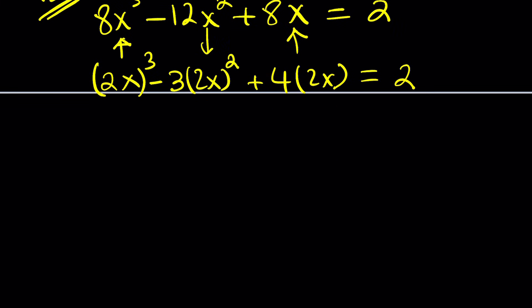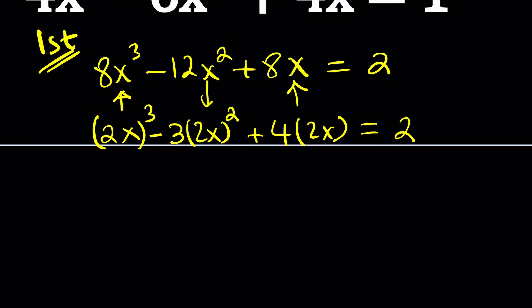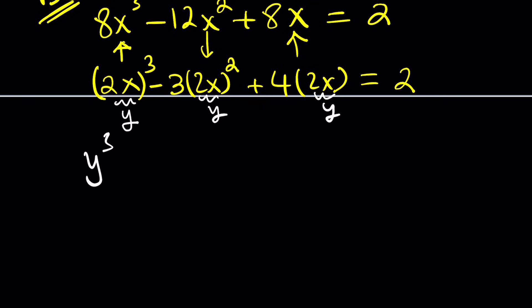Now, why did we do this? Because I'm about to use one of my favorite methods, which is substitution. Did you know that? So let's go ahead and replace 2x with y. Of course, that has to be everywhere. And this gives us a monic equation, a cubic monic. Which is good.